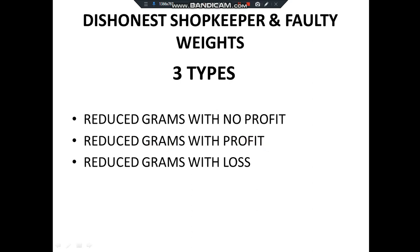The second type: he takes two profits — the cost price is something and the selling price is higher, so he takes profit that way, and also reduces the grams. So he gets two profits in the second type. The third type is: reduced grams with loss. He shows the customer that he is taking a loss — suppose he gets a material for 100 rupees and sells it for 50 rupees, claiming a loss of 50 rupees — but he actually takes a profit through reducing the grams.